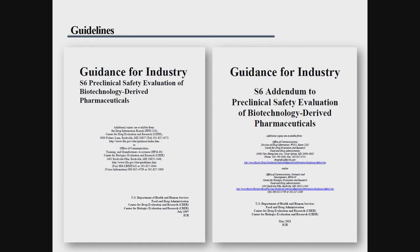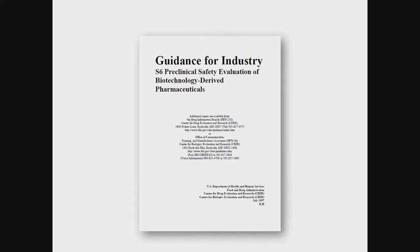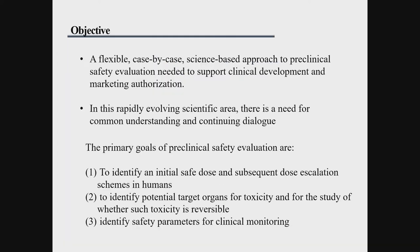Back in 2012, there was an addendum published. The S-6 deals with general issues, and the addendum provides additional information about the proper selection of animal species, as well as more specific information regarding biomedical products. That's what we'll be looking at this time.